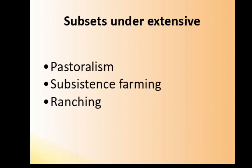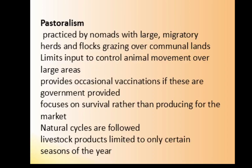The subsets under extensive livestock production are pastoralism, subsistence farming, and ranching. Pastoralism is practiced by nomads with large migratory herds and flocks over communal lands. The main input is controlling animal movement over large areas. Vaccinations may occasionally be provided if the government mandates it. The focus is on survival rather than producing for a market, and it follows natural cycles with products limited to certain seasons.